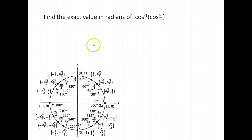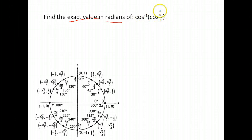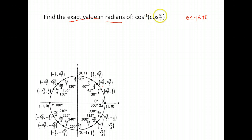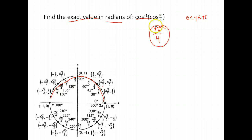Let's use all of that to answer a question. Find the exact value in radians of inverse cosine of cosine of π/4. This will work as long as this angle is in our range for cosine, which needs to be between 0 and π. Since π/4 is between 0 and π, it's in that range. So the inverse cosine of cosine of π/4 is just π/4 — but that's only because π/4 was in the appropriate range.